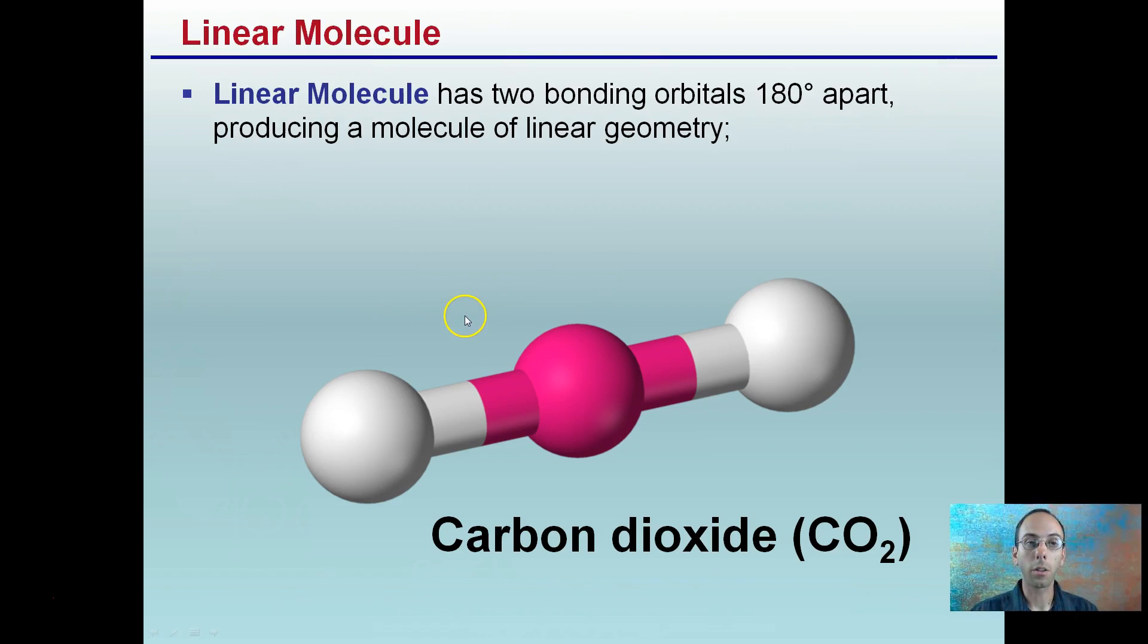Starting with the most basic, a linear molecule. A linear molecule has bonding orbitals 180 degrees apart, producing a molecule of linear geometry. So if I gave you a picture of this, could you identify this as a linear molecule is what I'd be looking for. This example is just carbon dioxide, CO2.